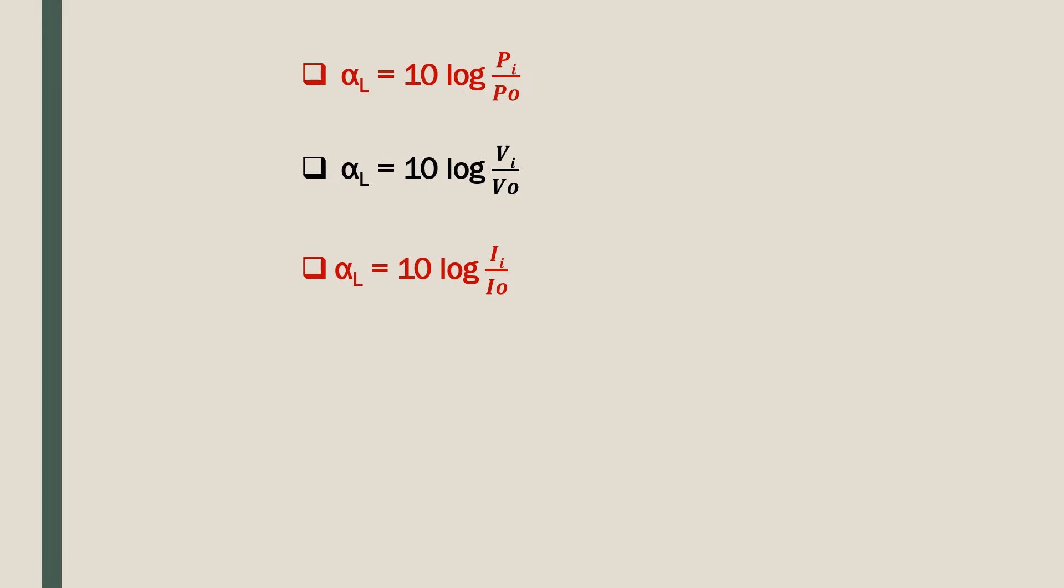As we have already discussed, attenuation loss in terms of input and output power is alpha L equal to 10 log Pi by Po. If the input and output voltages are given, then attenuation loss alpha L can be calculated using the equation alpha L equal to 10 log Pi by Po.